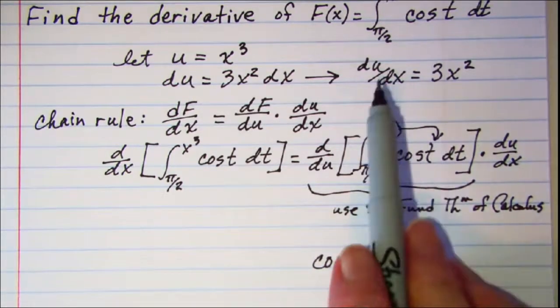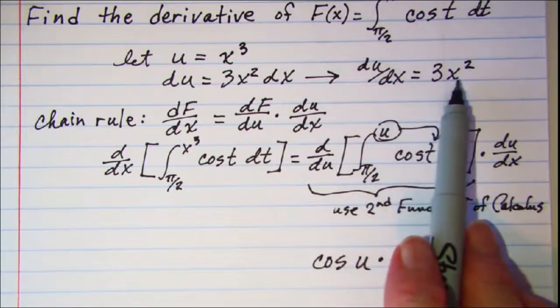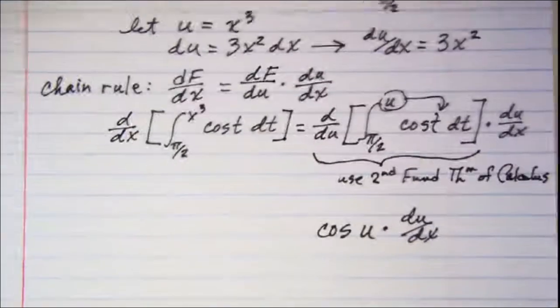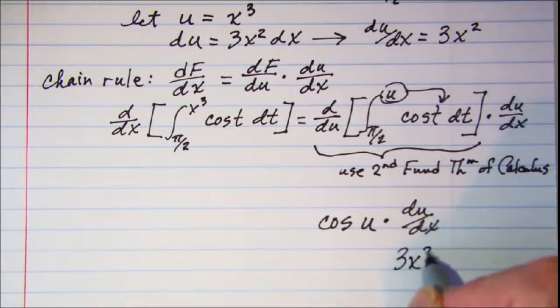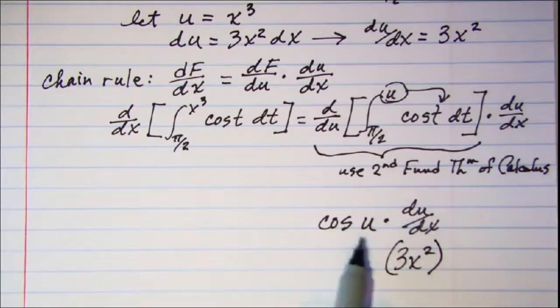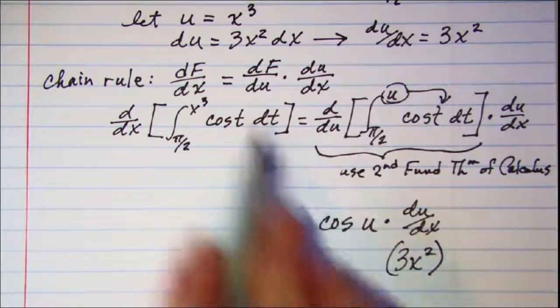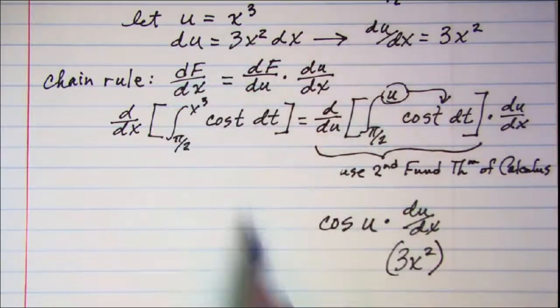Well up here we found that du dx was 3x squared, so this factor is 3x squared and then u we used x cubed so we'll put that back into our problem.